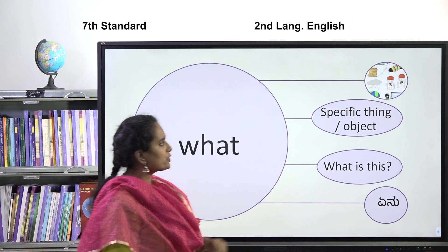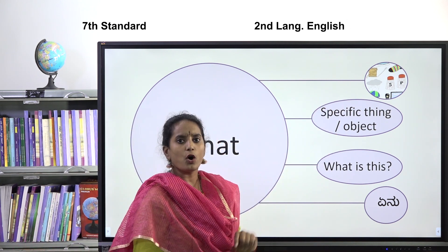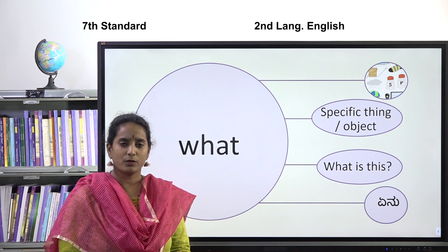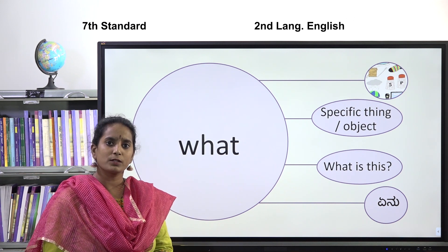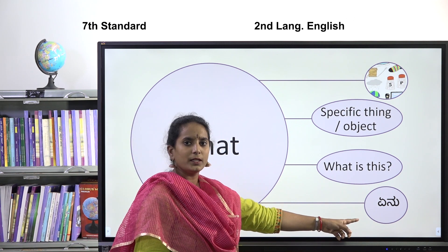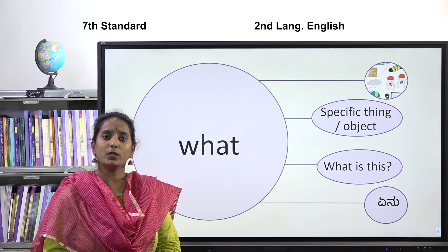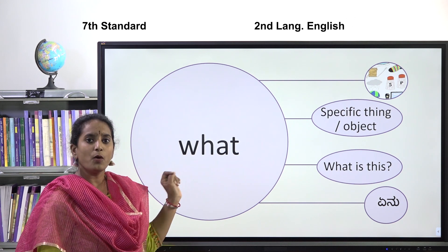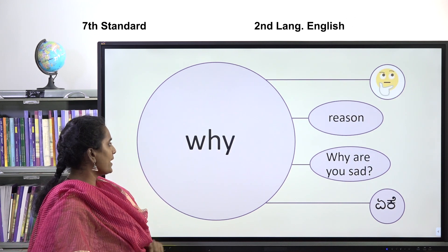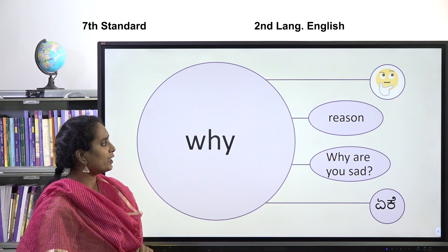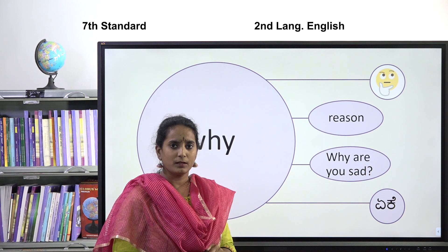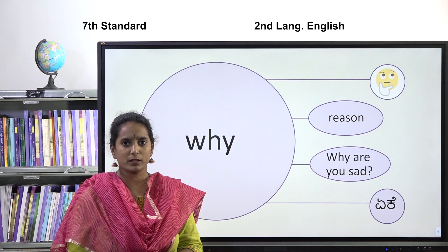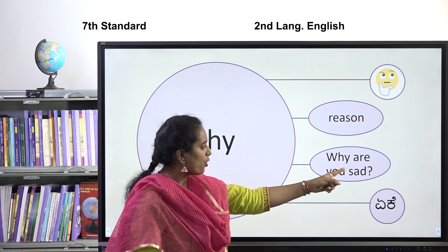The word 'what' is used for specific things or objects. For example: What is this? What is that? What are these? What are those? In Kannada, it corresponds to the word for 'what.' The word 'why' is used to ask for a reason — for example: Why are you sad?